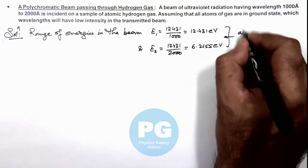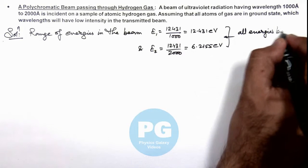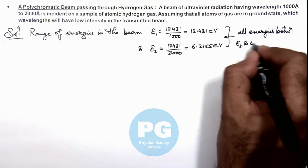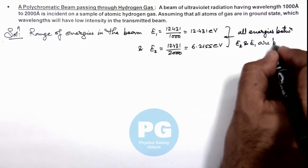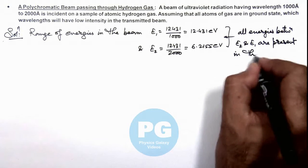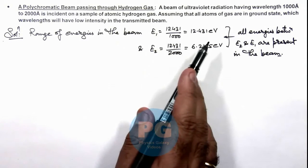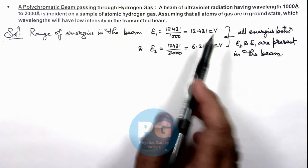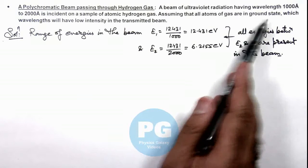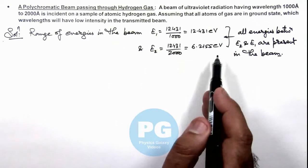So all energies between E2 and E1 are present in the beam. When such a beam falls on hydrogen gas, all transitions of hydrogen gas from n equal to 1, from ground state, which lie between these two energies, will be absorbed.